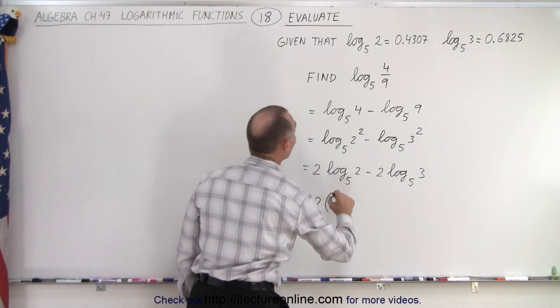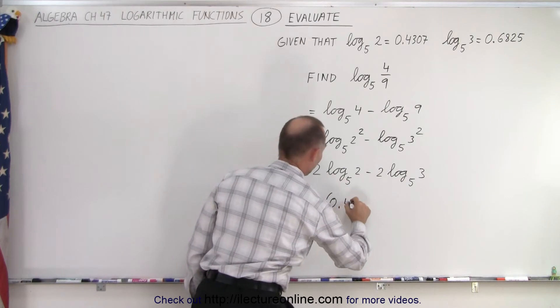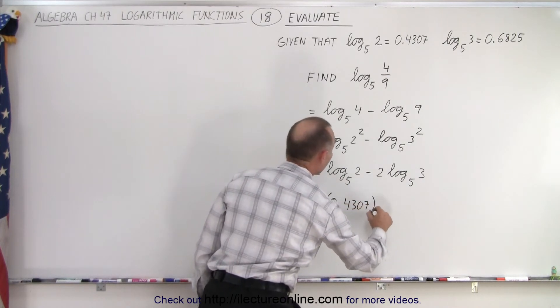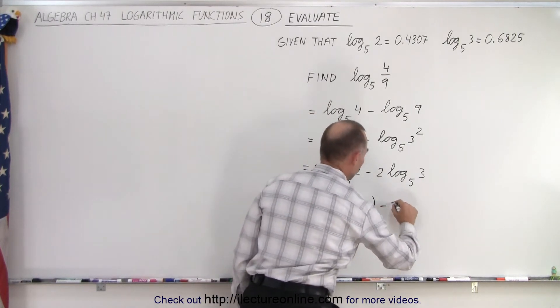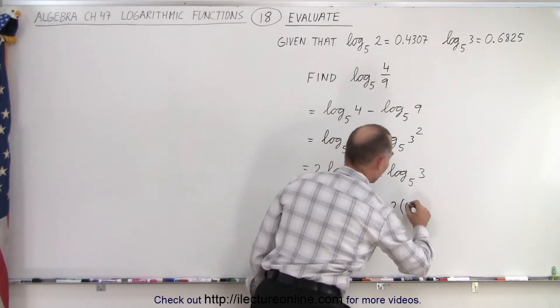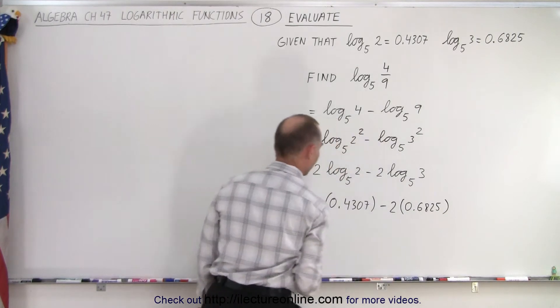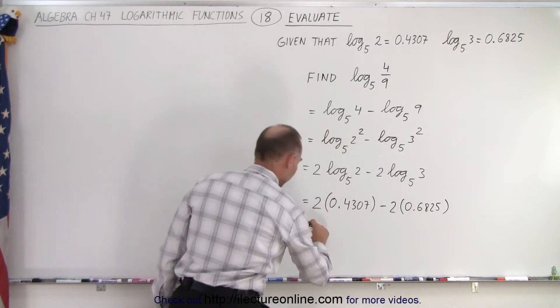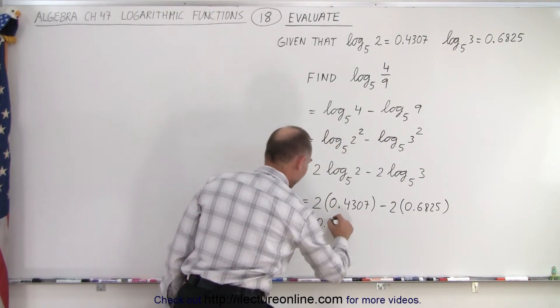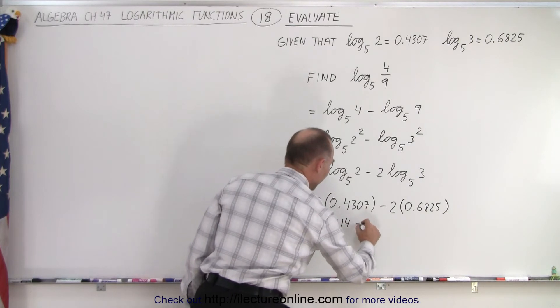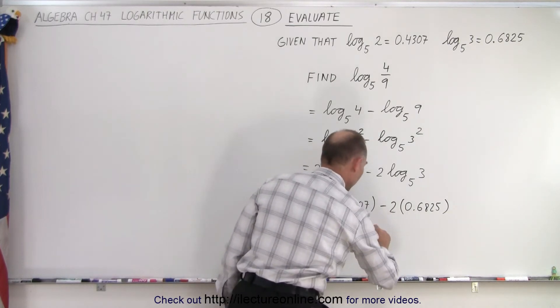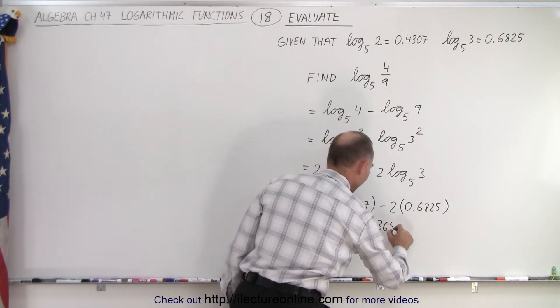This is equal to 2 times 0.4307 minus 2 times 0.6825. All right, now we multiply.